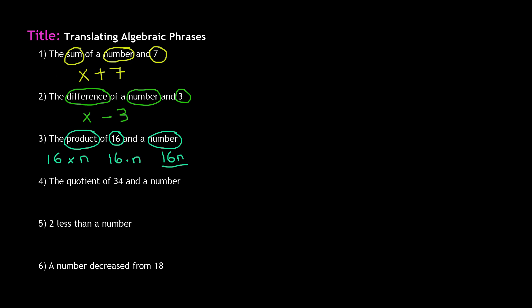Number four: the quotient of 34 and a number. Remember, the order does matter for subtraction and division, so you need to go in the order it tells you. The quotient of 34 and a number means 34 comes first, then the number. Key terms: quotient, 34, and a number. Quotient means dividing. You could write this as 34 divided by n, but more commonly it will be written in fraction form: 34 over n.